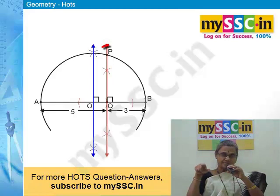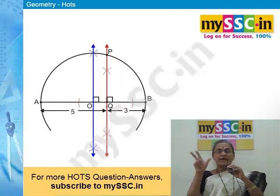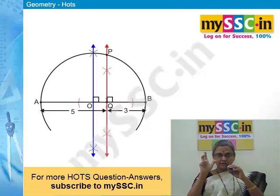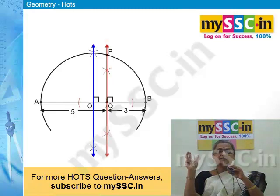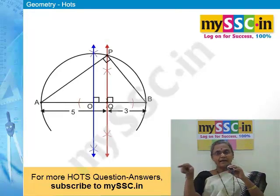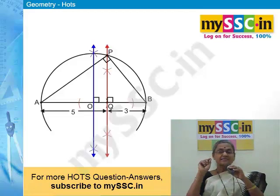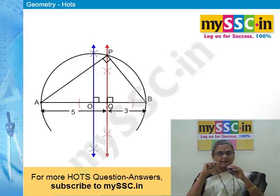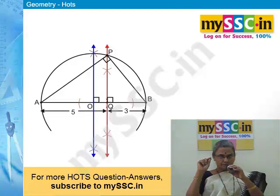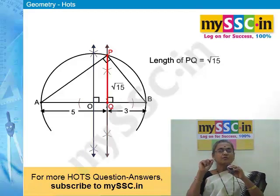After drawing the semicircle, you will get the intersecting point of the semicircle and the perpendicular drawn from Q. Call that intersecting point P. Therefore PQ is perpendicular to AB at Q, with AQ = 5 and QB = 3. Join AP and BP. The angle at point P is a right angle, because the angle in a semicircle is a right angle — so angle APB is 90°.